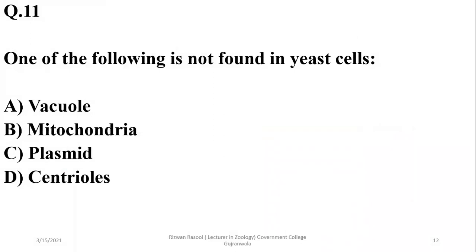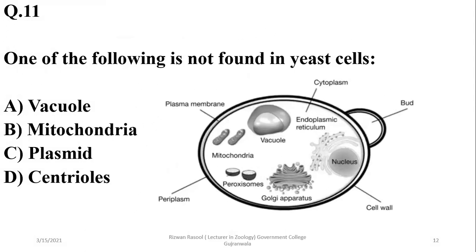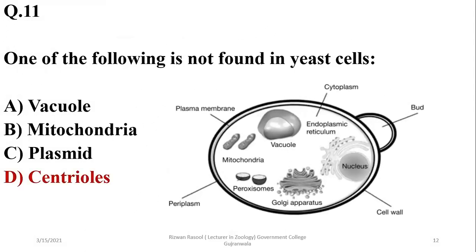Which of the following is not found in yeast cells? Yeast cells have vacuoles, mitochondria, as well as plasmids, but centrioles are usually missing in fungal and plant cells, so D.